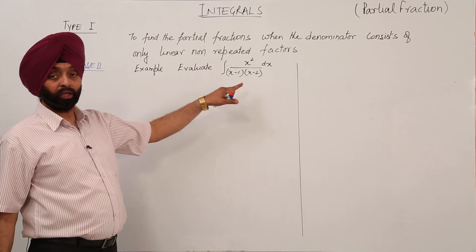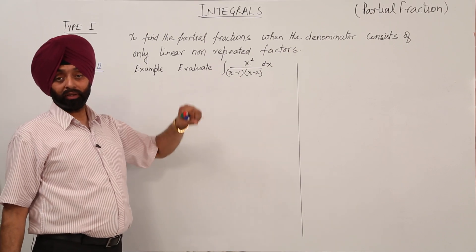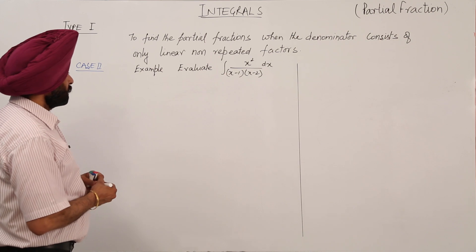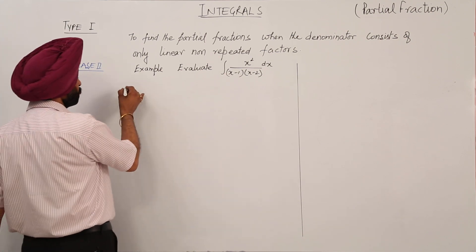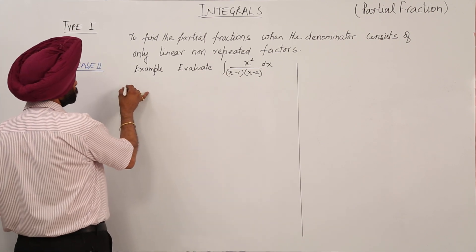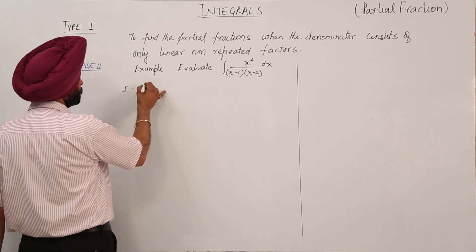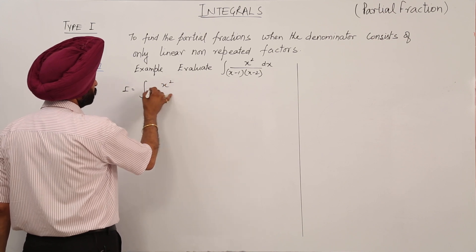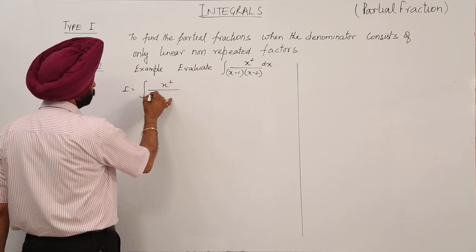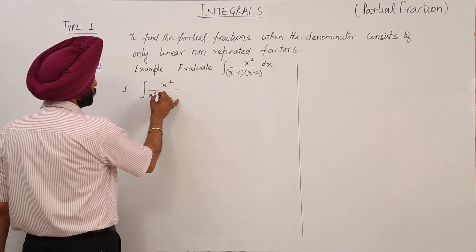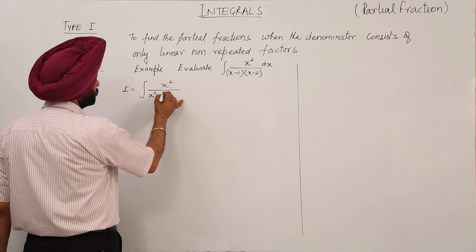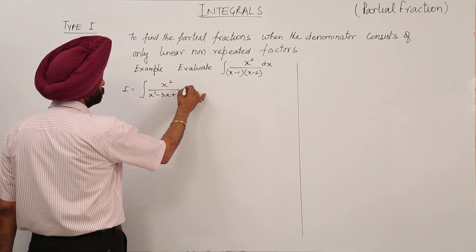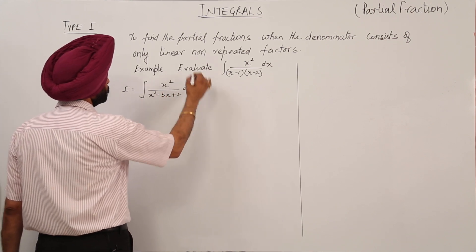The question is now an improper rational function. We will convert this into a proper function first. The integral is x² divided by (x² - 3x + 2) dx.